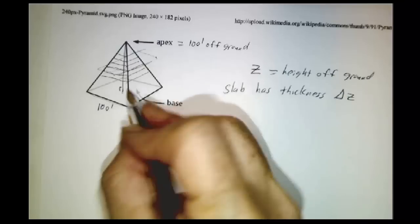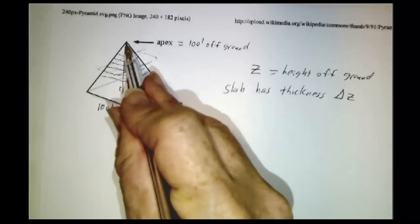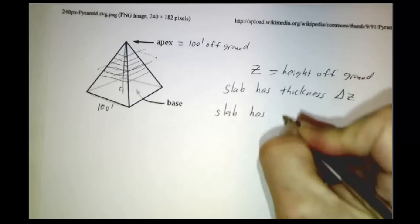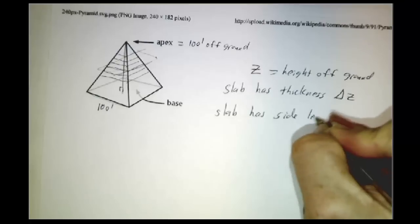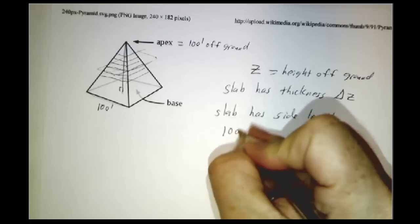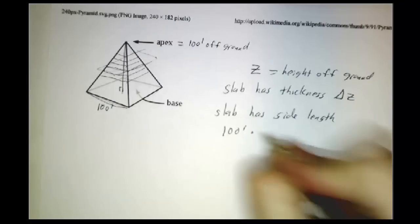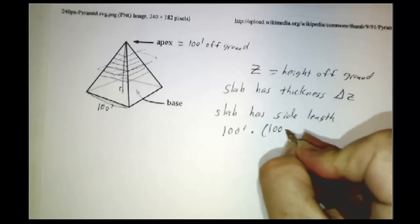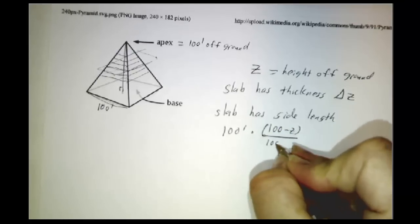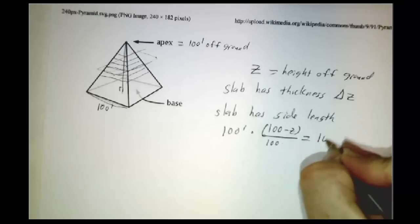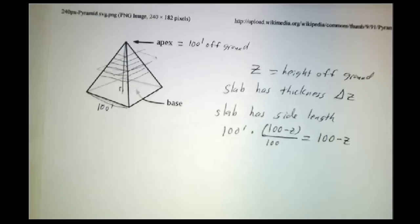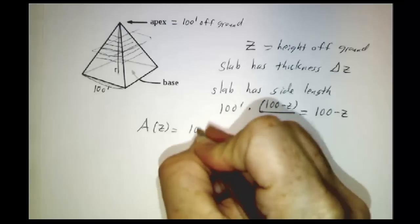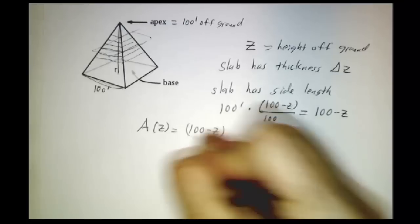In general, it's going to be proportional to your distance from the height. So the slab has side length 100 feet, that's what it is at the bottom, times how far you are from the top, that's 100 minus z, divided by how far the bottom is from the top. So the side length is 100 minus z.